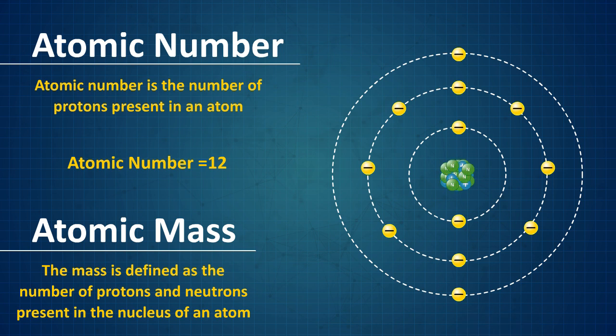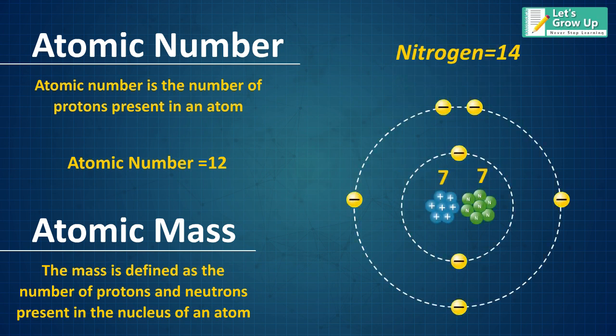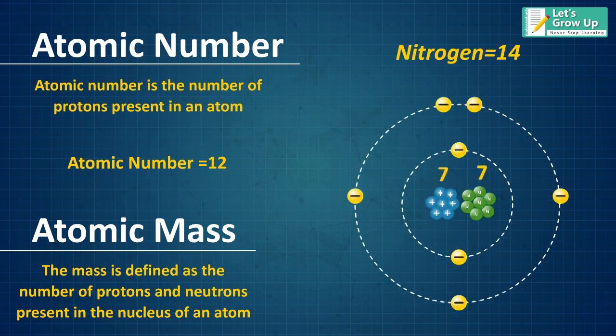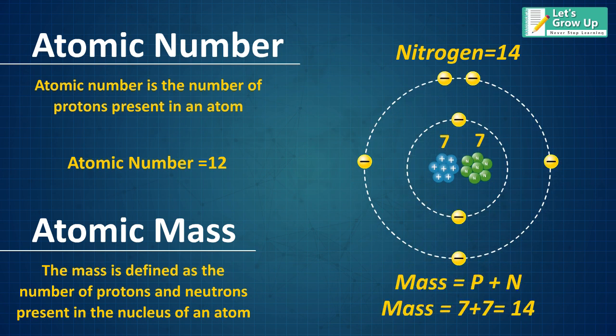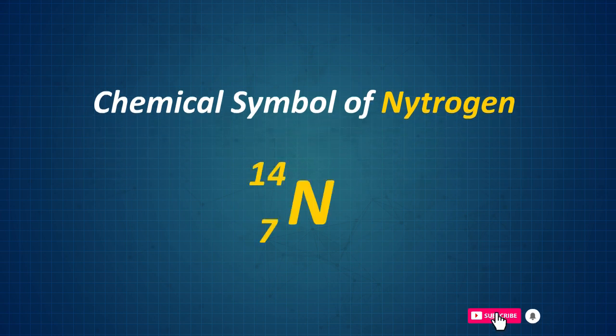For example, nitrogen atom 14 contains 7 protons and 7 neutrons. The mass number equals protons plus neutrons, which equals 14. To write the chemical symbol of nitrogen, you write it with the atomic mass 14 and atomic number 7. Let's take another example of carbon.